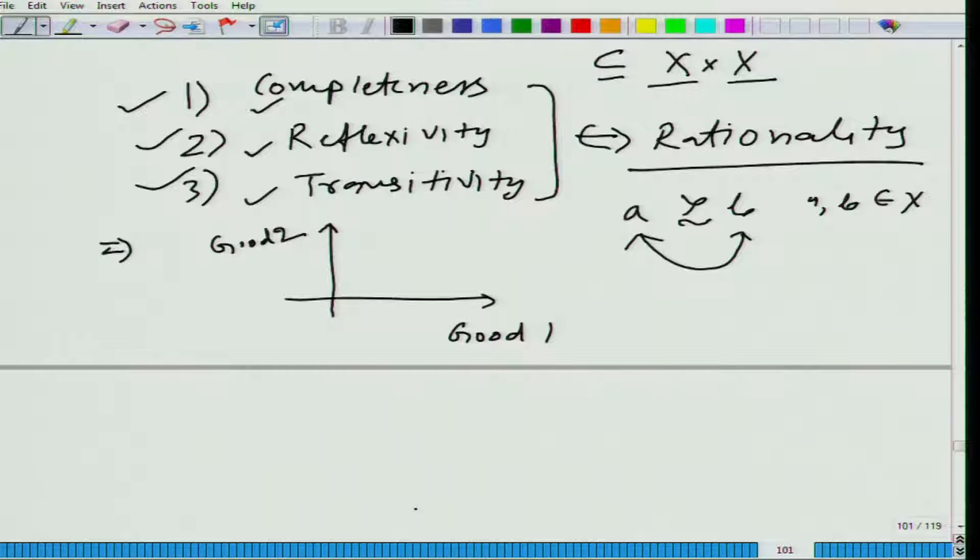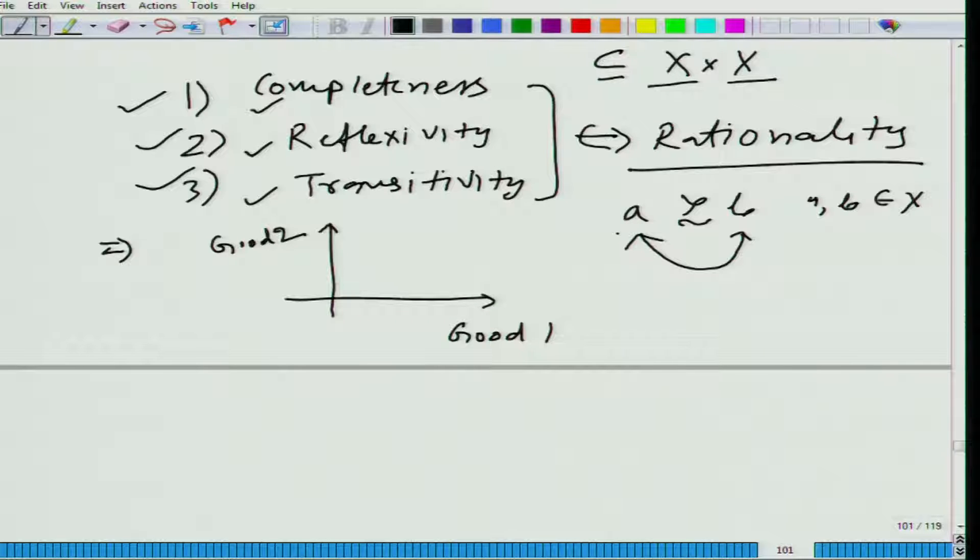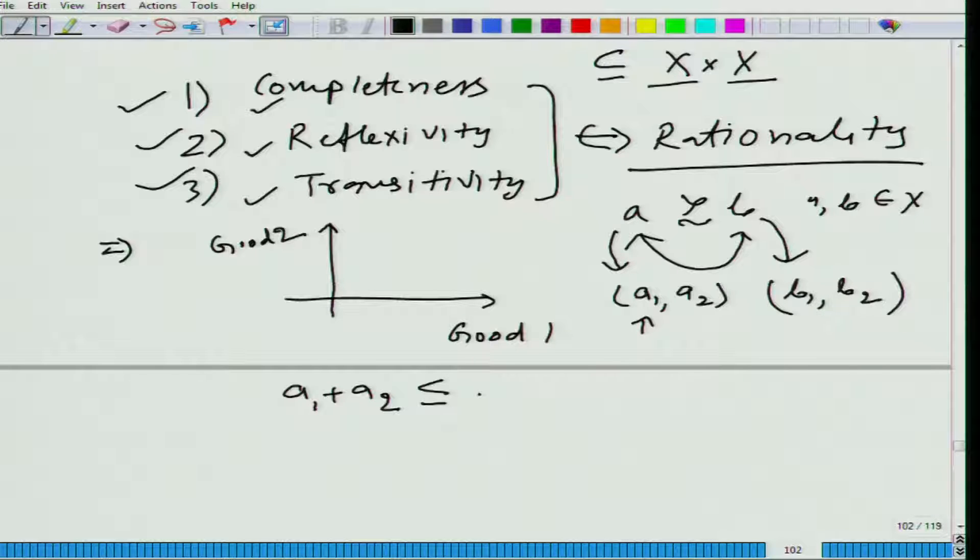Now let us say this person has a little bit strange kind of preference. When we have two goods, it has let us say a1 and a2. a1 represents the amount of good one and a2 represents amount of good two, and here b1 and b2. Just for definition sake, I am talking about a specific individual. What he has is that if a1 plus a2 is less than or equal to b1 plus b2, then he says that a is at least as good as b.